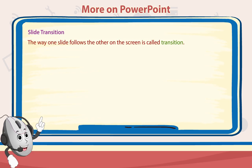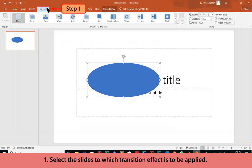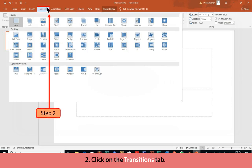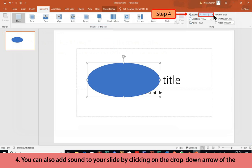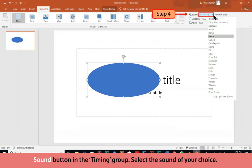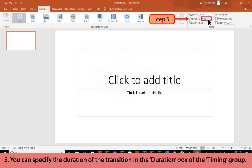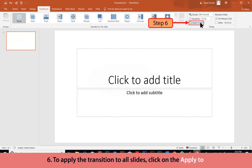Slide Transition: The way one slide follows the other on the screen is called transition. Follow these steps to apply a transition effect: Select the slides to which the transition effect is to be applied. Click on the Transitions tab, then select the desired option from the Transition to This Slide group. You can also add sound by clicking on the drop-down arrow of the Sound button in the Timing group and selecting the sound of your choice.